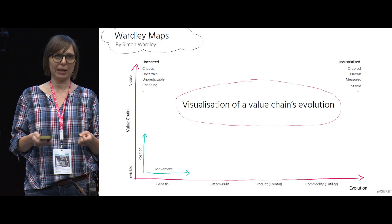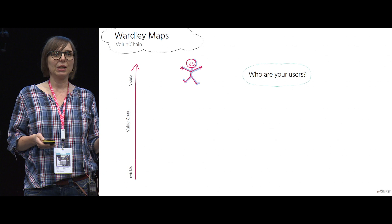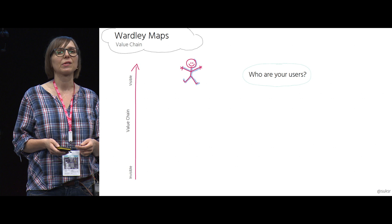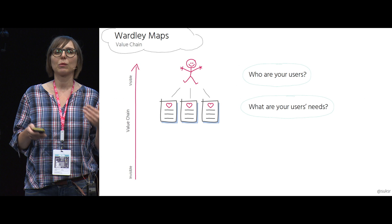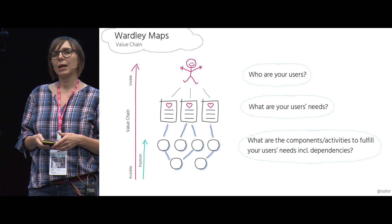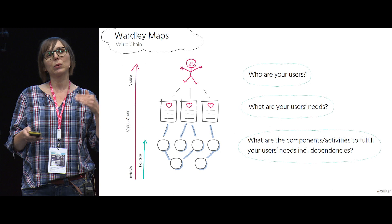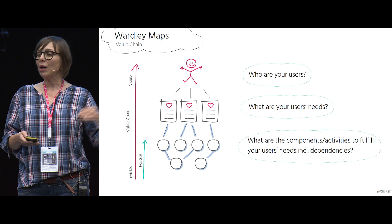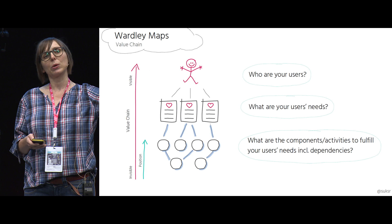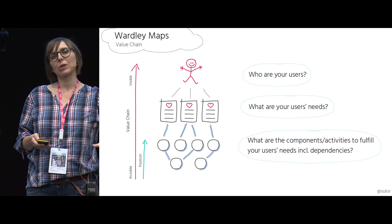What is a value chain? Behind every user need there is a value chain. It starts with the question: who are your users? Who is coming to you looking for help? What are their needs — the problems they would like to get solved? And what are the components that fulfill those user needs, either directly or indirectly, facilitating other components and activities in your value chain? How do these components depend on each other, and what is their position in the value chain? At the top we have components visible to your users — where users touch your system. At the bottom we have those components less visible to users.